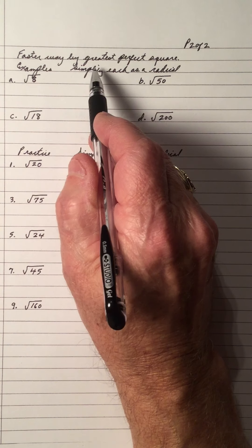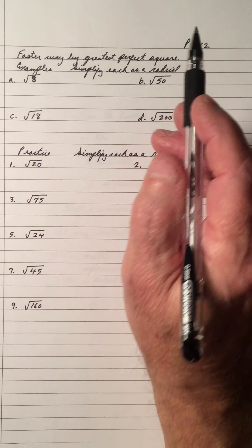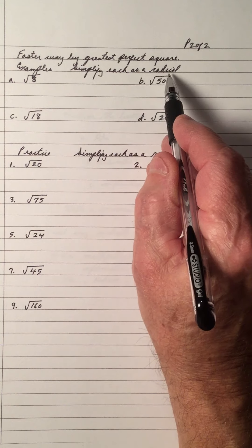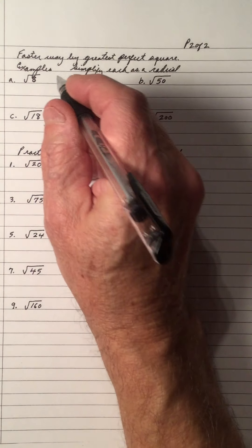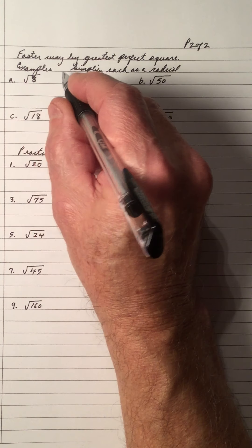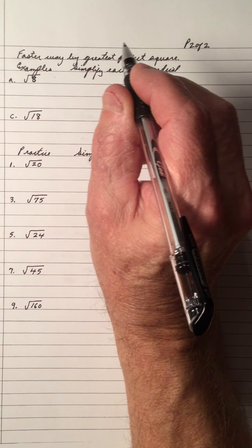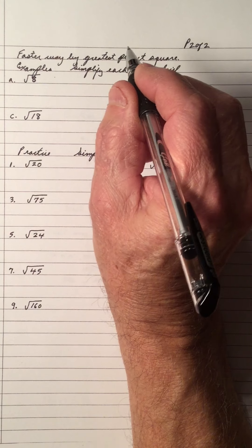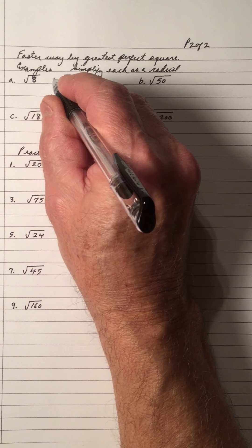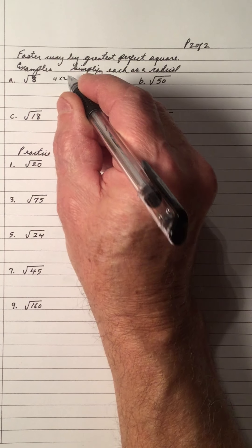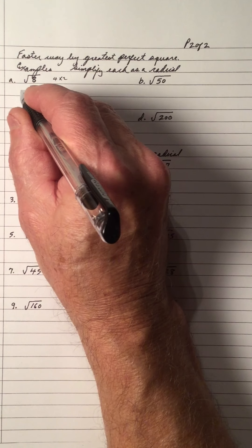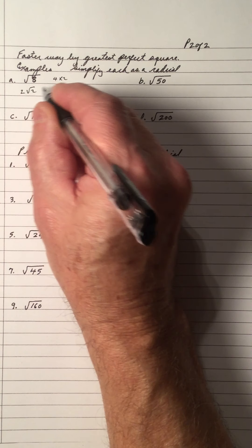The faster way by the greatest perfect square. Simplify each as a radical. The square root of 8, on the side you write down the largest greatest perfect square is 4 and it's times 2. So the square root of 4 is 2 and the 2 is left.